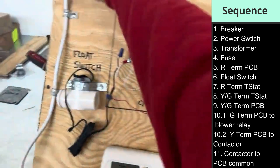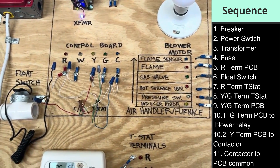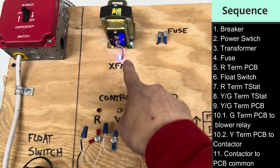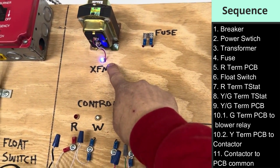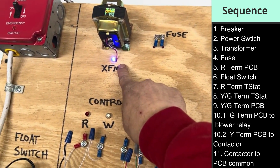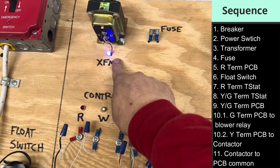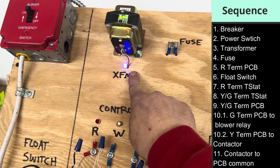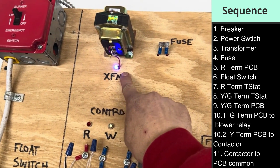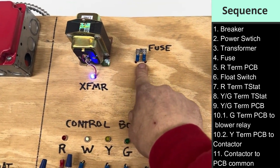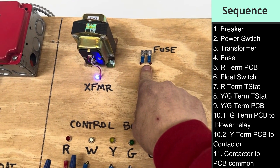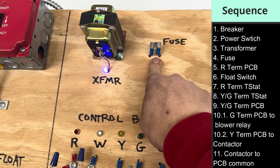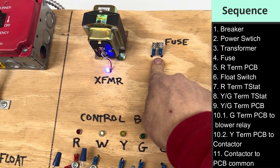The system is off. I'll turn it back on and simulate another problem. You can see nothing's happening at all, but I still have power on the secondary side of the transformer. Looking at our sequence: the breaker is on, the switch is on, the transformer is good, we have 24 volts — where does it go next? To the fuse. I pulled the fuse out to simulate a blown fuse. What that means is we have a short in the system somewhere — now we know what the problem is and just need to find that short.